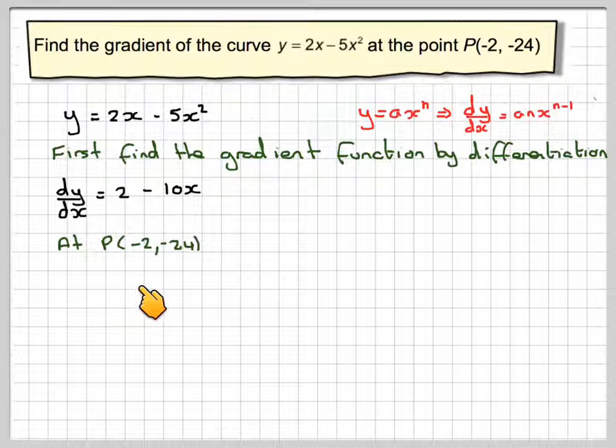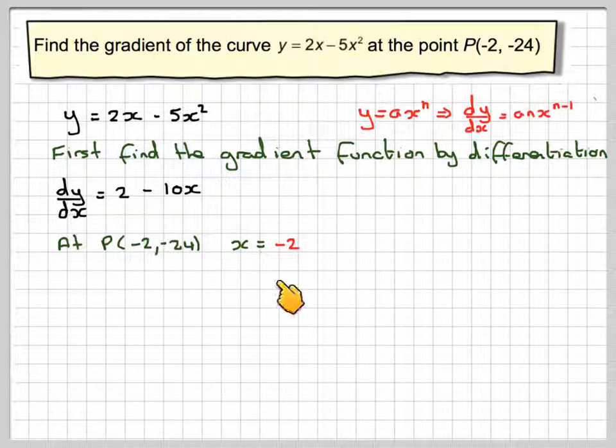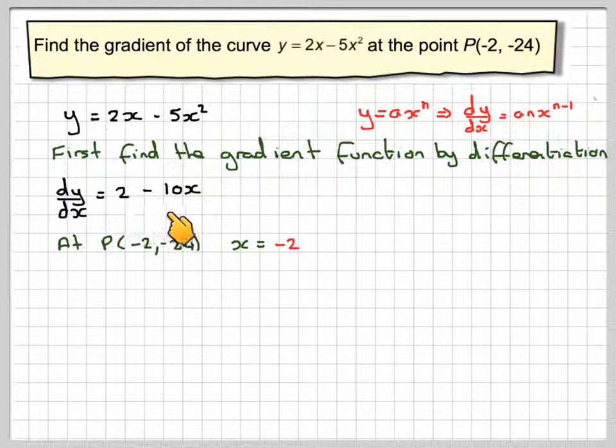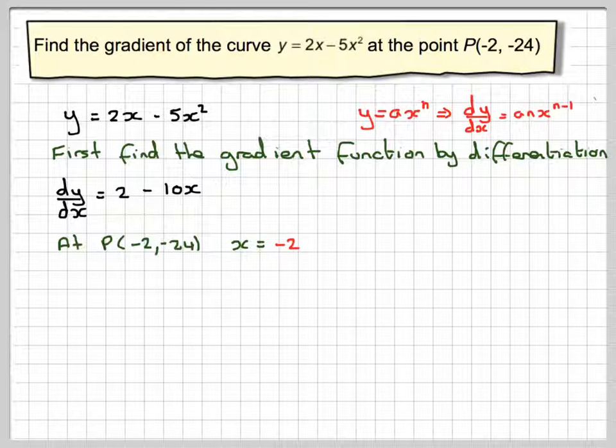At the point P(-2, -24), we only really need x equals minus 2; the minus 24 we don't really need to know in this case. So what we do, instead of x here, we now put in minus 2. So this is the general formula for the gradient, and now we're finding the gradient at a specific point on the curve.